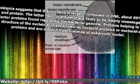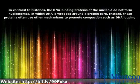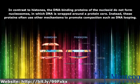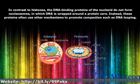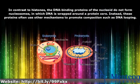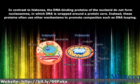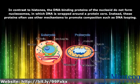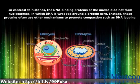In contrast to histones, the DNA binding proteins of the nucleoid do not form nucleosomes, in which DNA is wrapped around a protein core. Instead, these proteins often use other mechanisms to promote compaction, such as DNA looping.